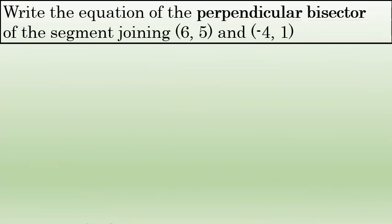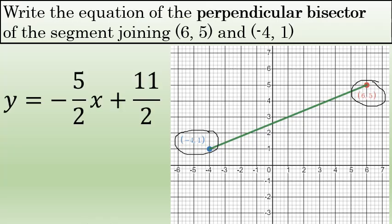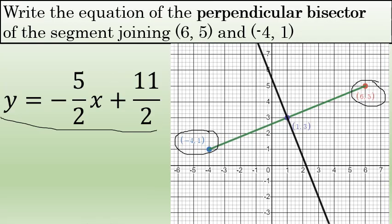I can verify that this is correct by looking at the graph. Recall that the graph of the segment with endpoints negative 4, 1 and 6, 5 looks like this. I'll check the equation of my perpendicular bisector, y equals negative 5 halves x plus 11 halves, by graphing it using a graphing utility on this same coordinate plane. When I ask the graphing utility to graph that equation, it yields this black line, which passes through the midpoint of the segment, bisects the segment, and forms four right angles when it intersects the segment. This graph verifies that y equals negative 5 halves x plus 11 halves is, in fact, the perpendicular bisector of the segment.